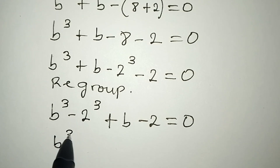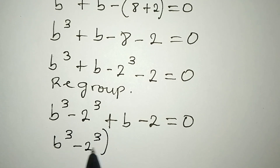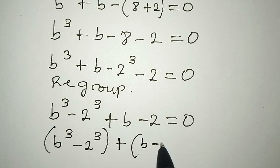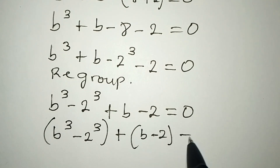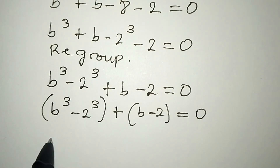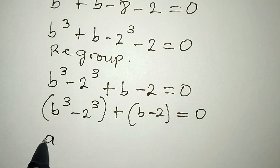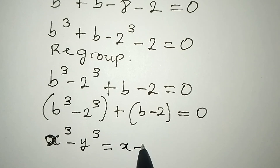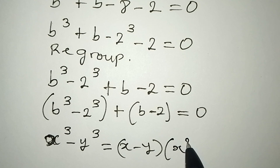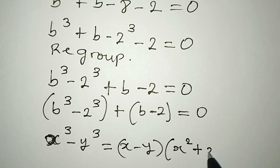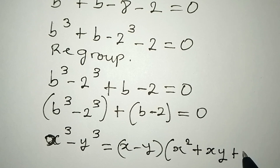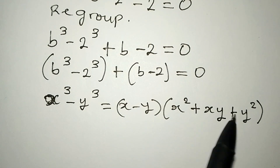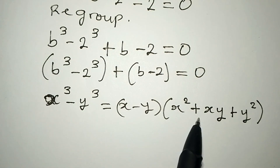I'm going to factorize b to the power of 3 minus 2 to the power of 3, and also factorize b minus 2. Remember the standard form: x³ minus y³ equals (x minus y)(x² plus xy plus y²). I will express this expression in that form.